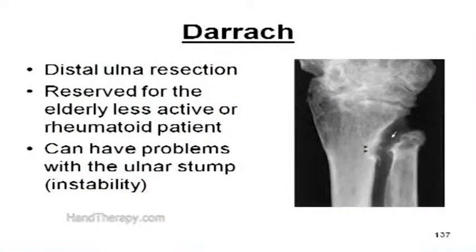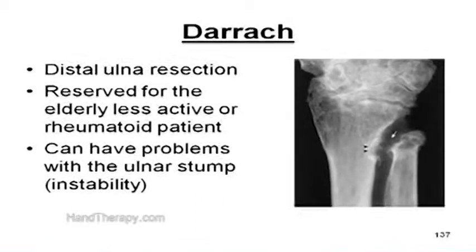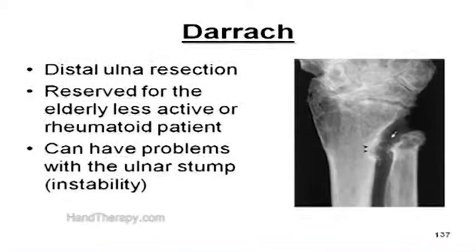If you take a look at slide number 137, you'll see an example of a DERA. The distal ulna is resected in this procedure. It is reserved for the elderly, less active, or rheumatoid patients, because you can have problems with the ulnar stump that results and causes instability patterns at some point.